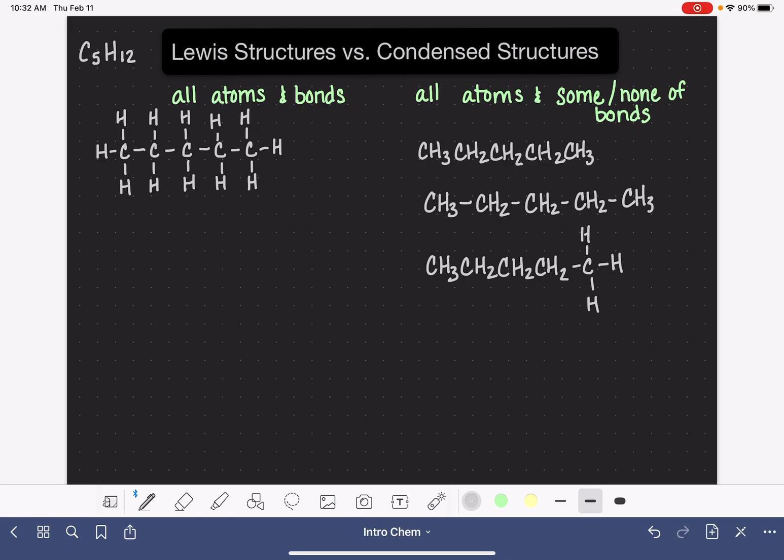Another possibility, when we have a lot of repeating pattern in a molecule, the way we have all these CH2s that repeat, another possibility is to take that repeating pattern, in this case CH2, put it together in parentheses, and then use a subscript to indicate how many of those CH2s we have. So we've got one, two, three of them. So we'll use this little subscript three to communicate that there are three of those repeating patterns like that.